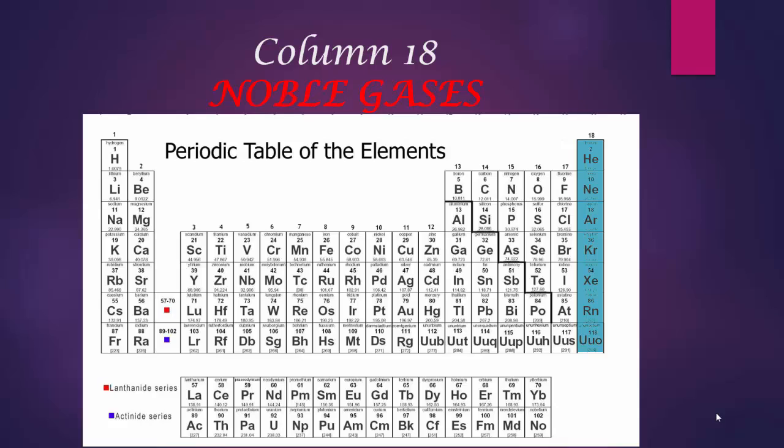Helium only has 2. But if you take a look at the electron configuration, what you see is in the outermost levels, you have 1s2, completely filled. 2s2, 2p6, completely filled. 3s2, 3p6. 4s2, 4p6. 5s2, 5p6. 6s2, 6p6. 7s2, 7p6. 2 plus 6 equals 8. But all of the elements in that column have a full valence shell.